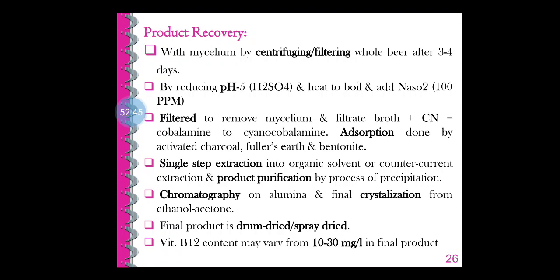Cell disruption in pretreatment is carried out by two methods. Mechanical methods include homogenizer, agitation with abrasives, and ultrasonication. Non-mechanical methods include physical shock (e.g., heat), chemical methods (detergents, solvents, osmotic shock), and enzymatic methods.